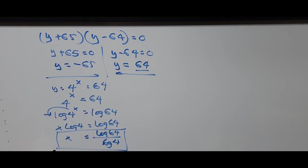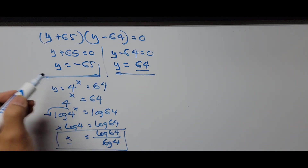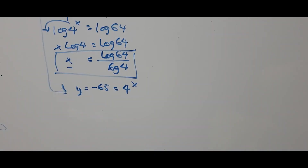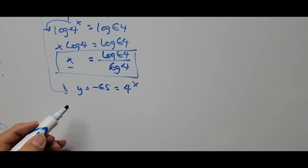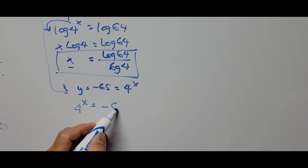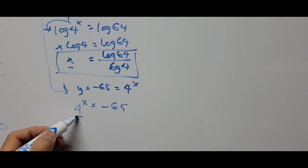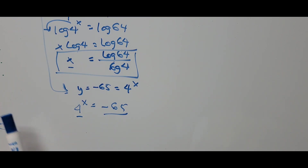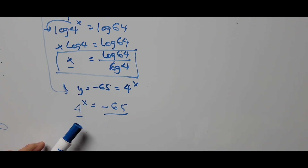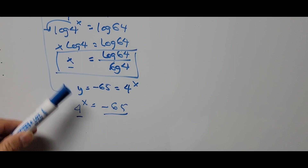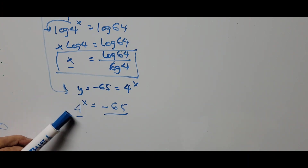On the other side, we take the negative value y = −65: so 4 to the power x equals −65. Since the left side is always positive and the right side is negative, if we solve for x here the result will be a complex number — on imaginary numbers — away from the real solution.